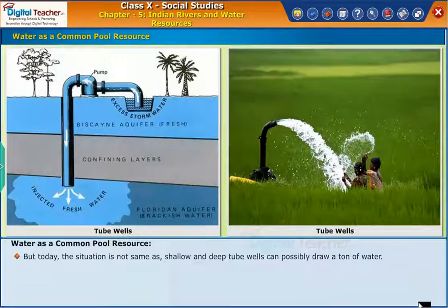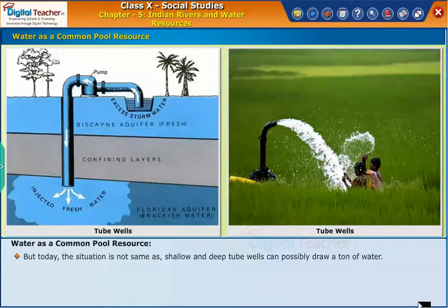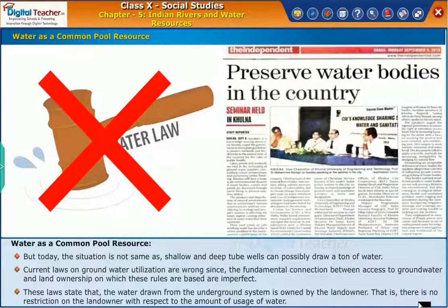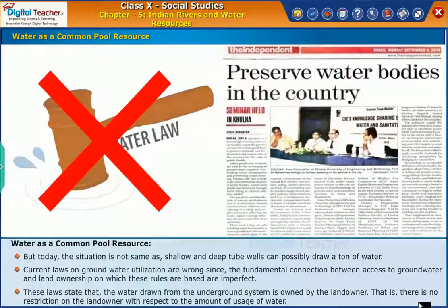But today the situation is not the same, as shallow and deep tube wells can possibly draw a large amount of water. Current laws on groundwater utilization are flawed since the fundamental connection between access to groundwater and land ownership on which these rules are based are imperfect. These laws state that the water drawn from the underground system is owned by the landowner — that is, there is no restriction on the landowner with respect to the amount of water used.